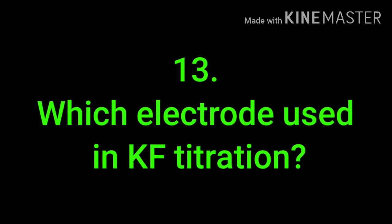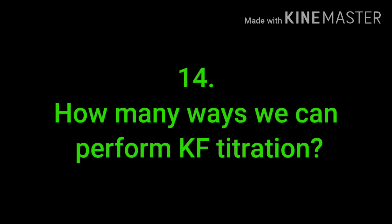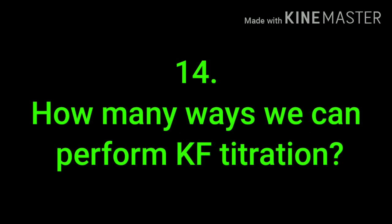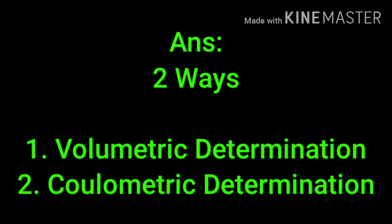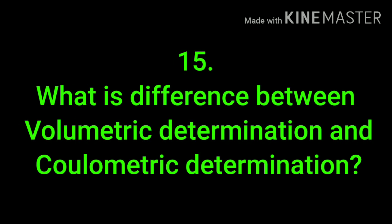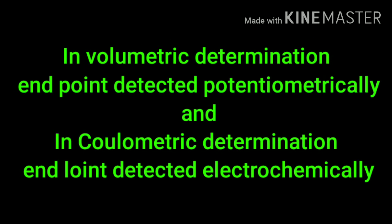Which electrode is used in KF titration? The answer is the platinum electrode. How many ways can we perform KF auto titration? There are two ways: volumetric determination and coulometric KF titration. What is the difference between the two? In volumetric determination, the end point is detected potentiometrically, and in coulometric KF titration, the end point is detected electrochemically.